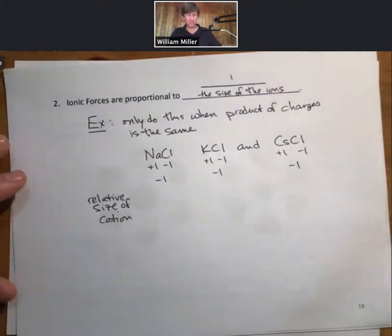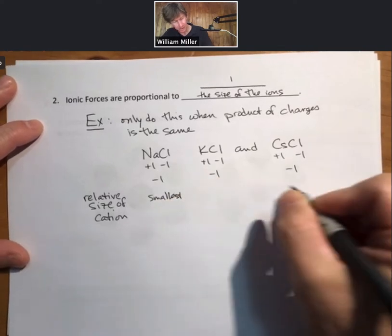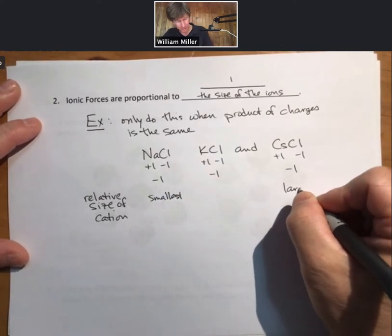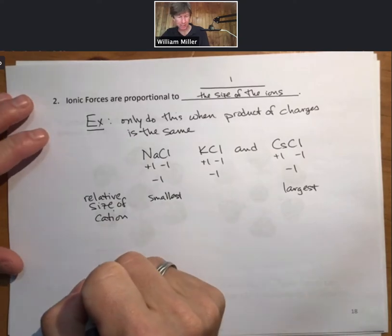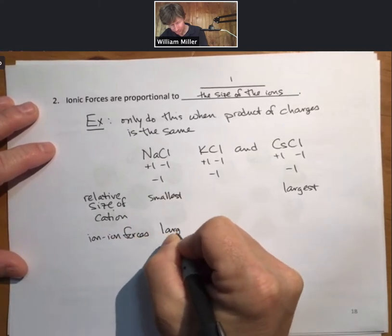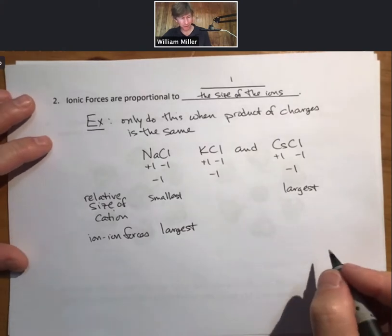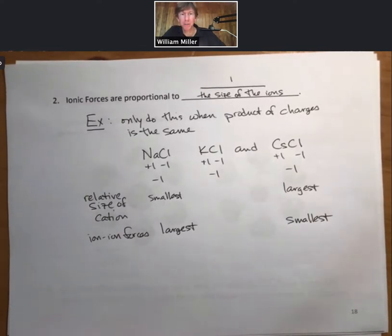These are all plus one ions. The trend is still correct. They've all lost one electron. So as you go from sodium to potassium to cesium, they get bigger, the ions as well. And that's good for ions of the same charge. If they have different charges, things get trickier. Sodium is the smallest. Cesium is the largest amongst these three. Since it's proportional to one over the size of the ions, the ion-ion forces are largest for sodium chloride and smallest for cesium chloride.